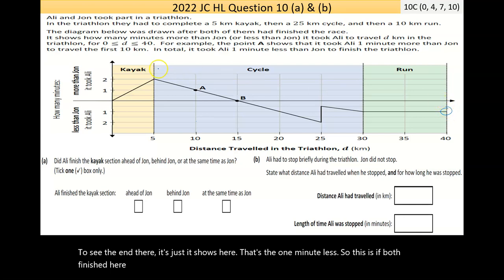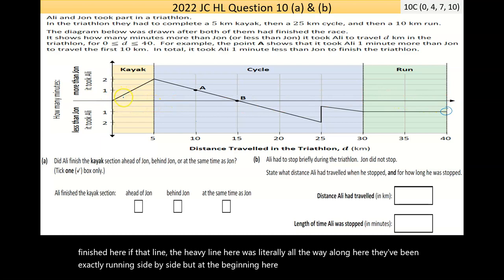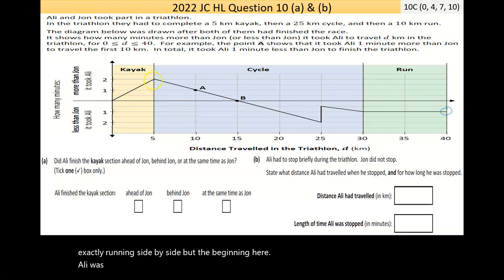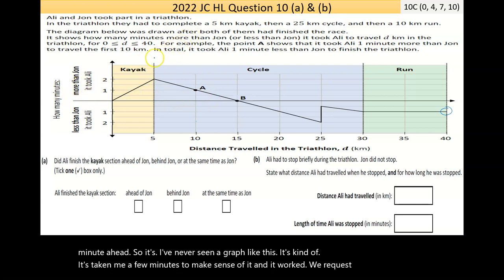If they both finished here, if that heavy line was literally all the way along here, they'd have been exactly running side by side. But at the beginning here, Ali was two minutes slower, and she's catching up, and she overtakes John. And for some reason, time is passing but no distance is travelling, so Ali must have stopped, and then she starts moving again, and then they go at the same speed. But Ali's like a minute ahead. So I've never seen a graph like this. It's taken me a few minutes to make sense of it. And it's worth a question like this, taking time.